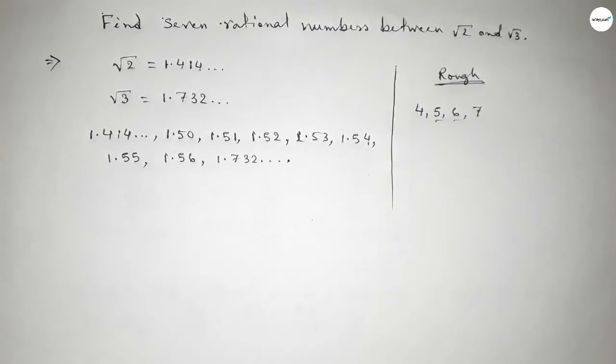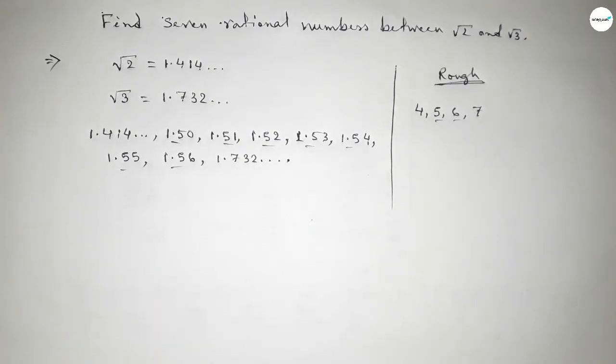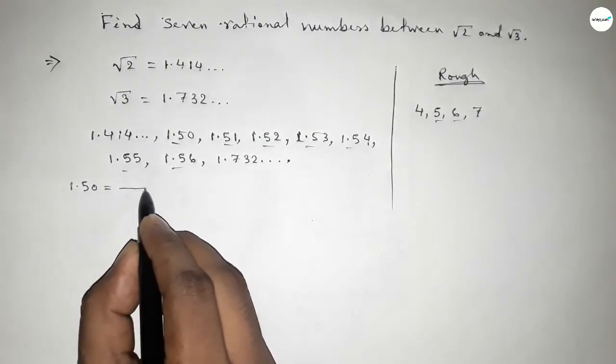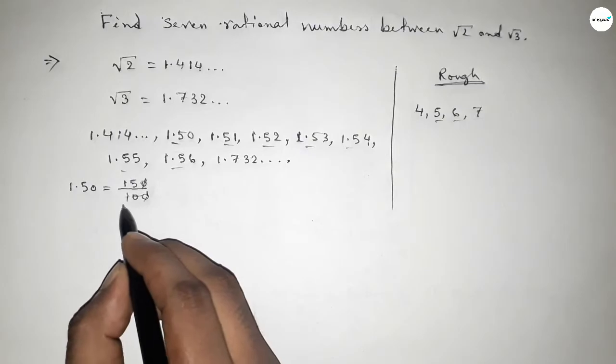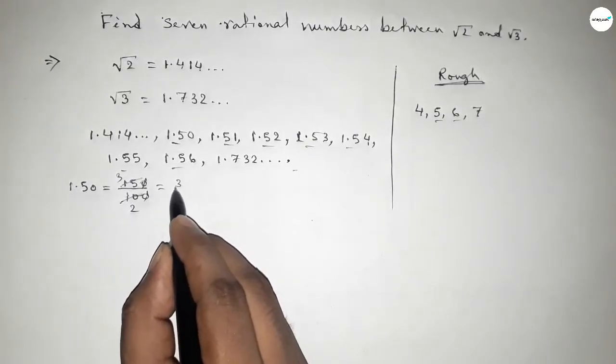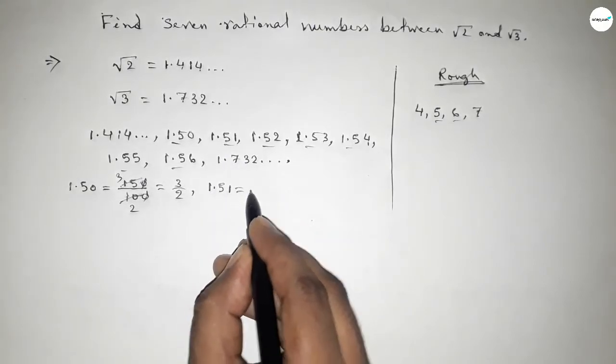Now simplifying these numbers. We can write 1.50 as 150 over 100, which simplifies to 3 over 2. 1.51 equals 151 over 100.